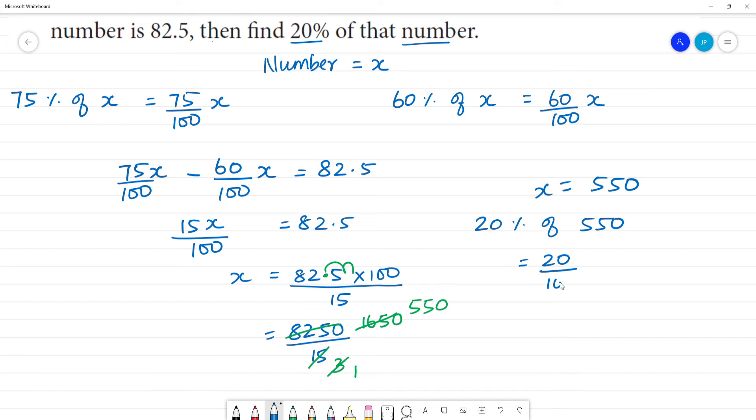Simplifying by canceling zeros: 20 into 550 becomes 2 into 55, which equals 110. Therefore, 20% of 550 is 110.